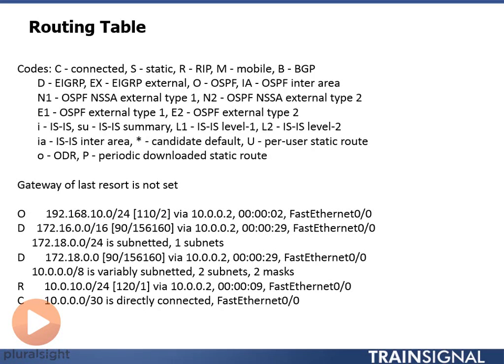This wraps up the conceptual portion of dynamic routing. From here we need to get into configuring routing protocols. Since RIP is used so rarely, we're not going to learn how to configure it, but we will configure OSPF and EIGRP — including both IPv4 and IPv6. In the ICND1 series we'll configure OSPF at a basic level, and in ICND2 we'll cover more advanced OSPF configuration as well as IPv6. Thanks for watching — I look forward to seeing you in future videos.